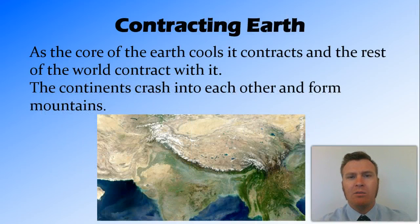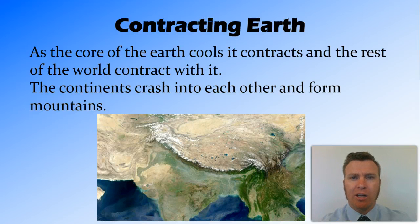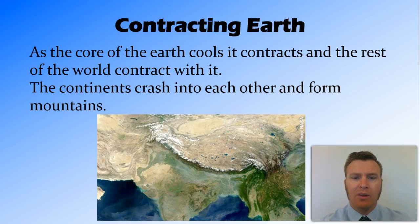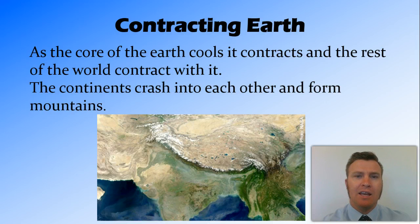With these fixed earth theories we're looking at the late 19th towards the early 20th century. One of the fixed theories is the contracting earth — as we know, objects cool down and shrink, so the hot core of the earth as it cools must be shrinking, meaning the whole earth is shrinking. As the earth shrinks, the continents on top crash into each other, forming mountain ranges. An example would be the Indian continent crashing into the Asian continent causing the Himalayas.